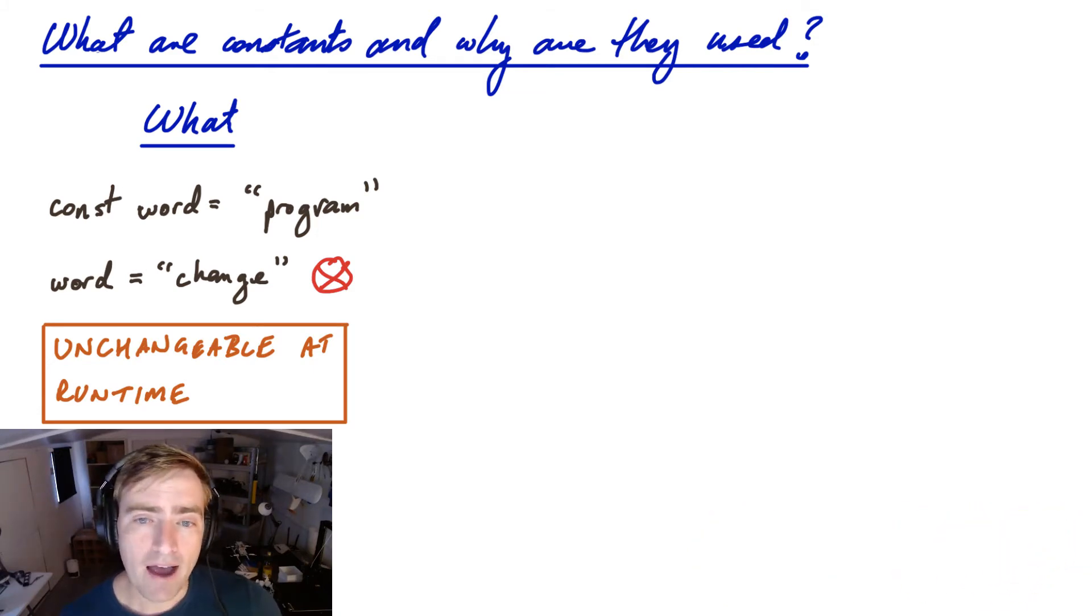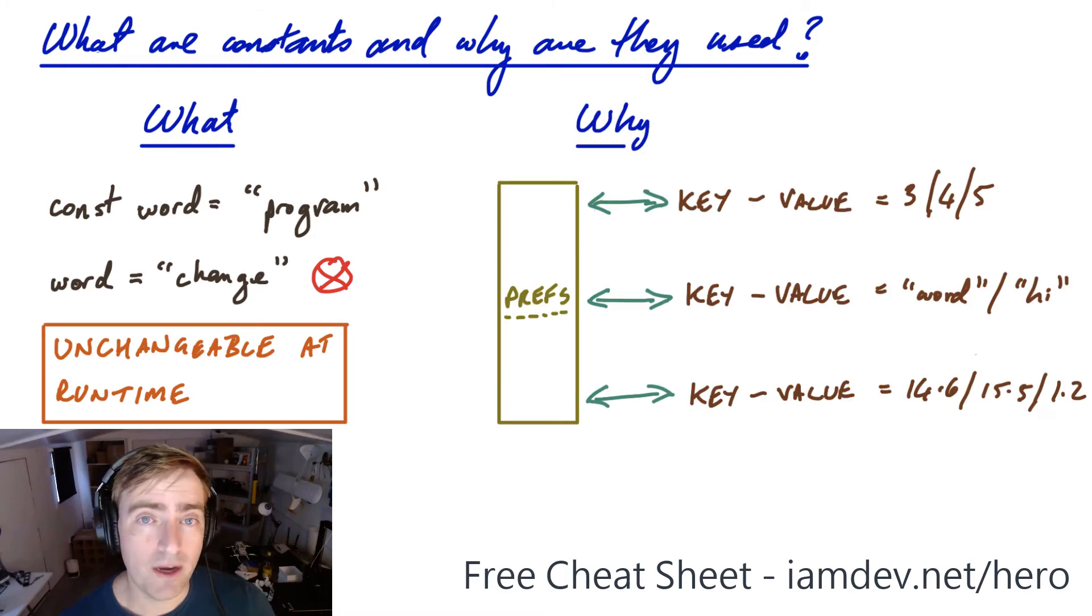Let's say you have some kind of preferences in your application. Windows has preferences where you can store data, Android has the same, iOS has the same. In fact, every system has the same. And those preferences use keys and values to store data. So you might have an integer such as 3, 4, 5.